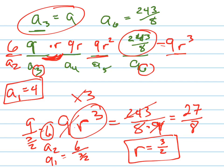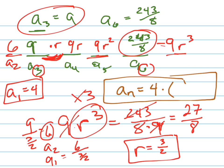And now I can write my formula. a sub n, my nth term, is going to be equal to my first term, which is 4, times my common ratio, which is 3 halves, to the n minus 1 power. There's my nth term.